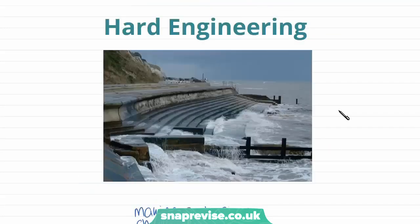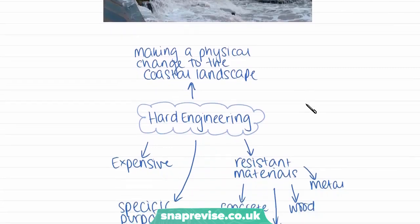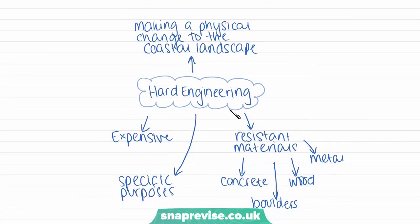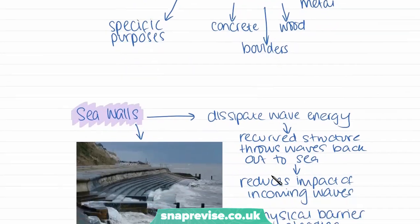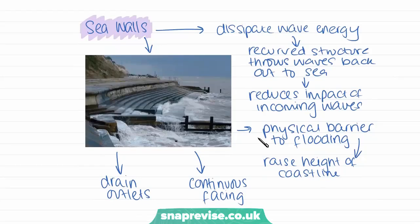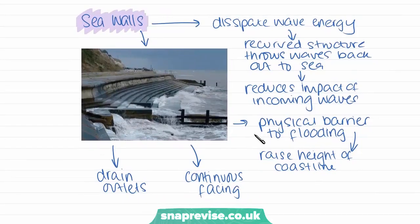Hard engineering involves making a physical change to the coastal landscape. These strategies tend to be very expensive, have specific purposes, and are made of very resistant materials such as concrete, boulders, wood, and metal. They are very significant structures, and we'll now go through the different types found in coastal environments.